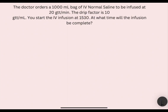The doctor orders a thousand mL bag of IV normal saline to be infused at 20 drops per minute. The drip factor is 10 drops per mL. You start the IV infusion at 1530. At what time will the infusion be complete?